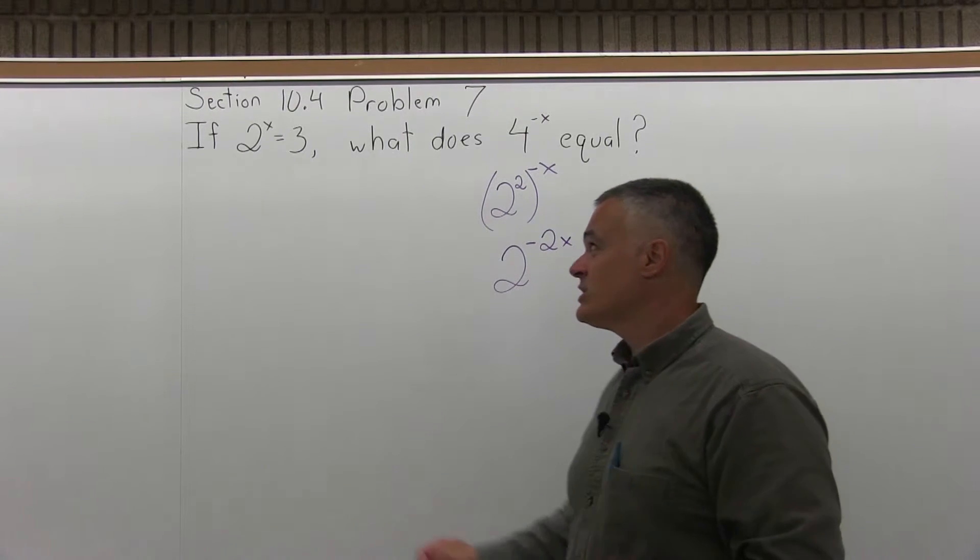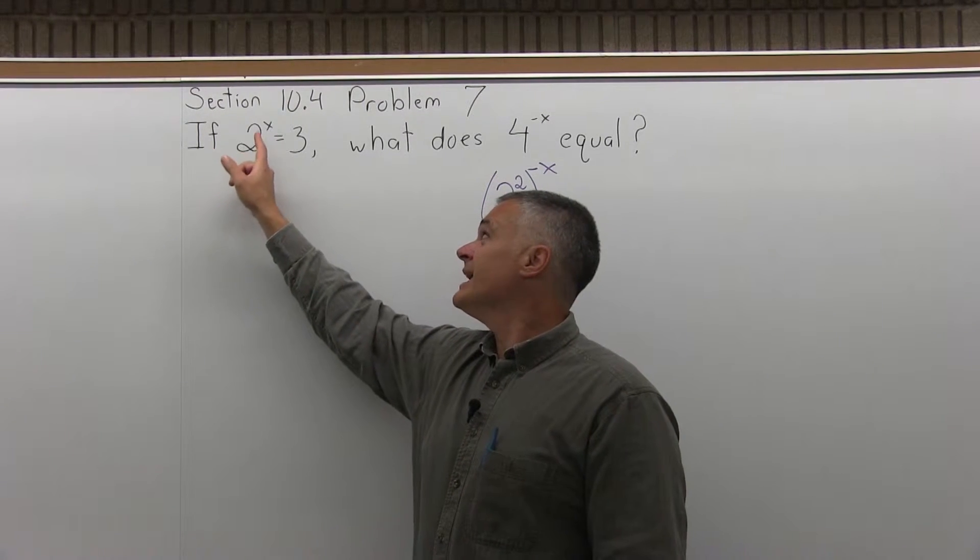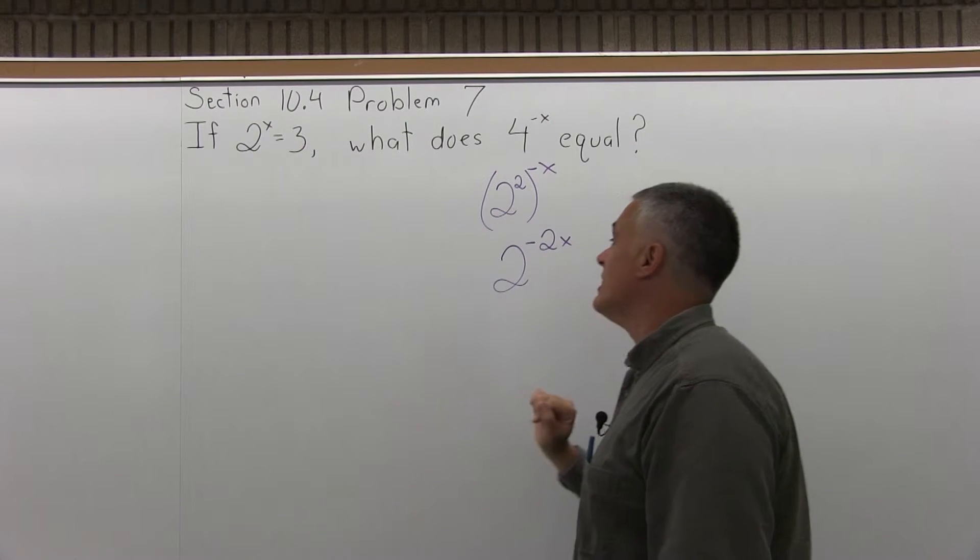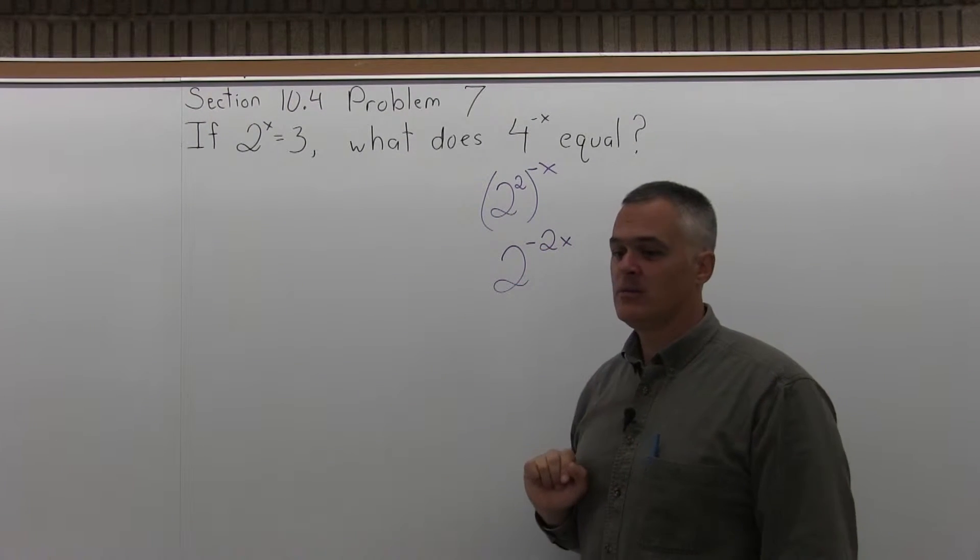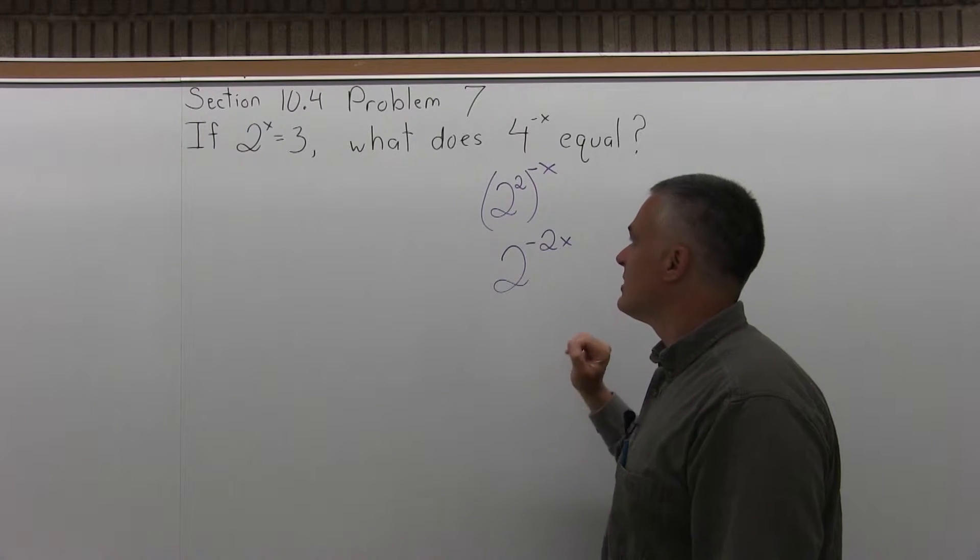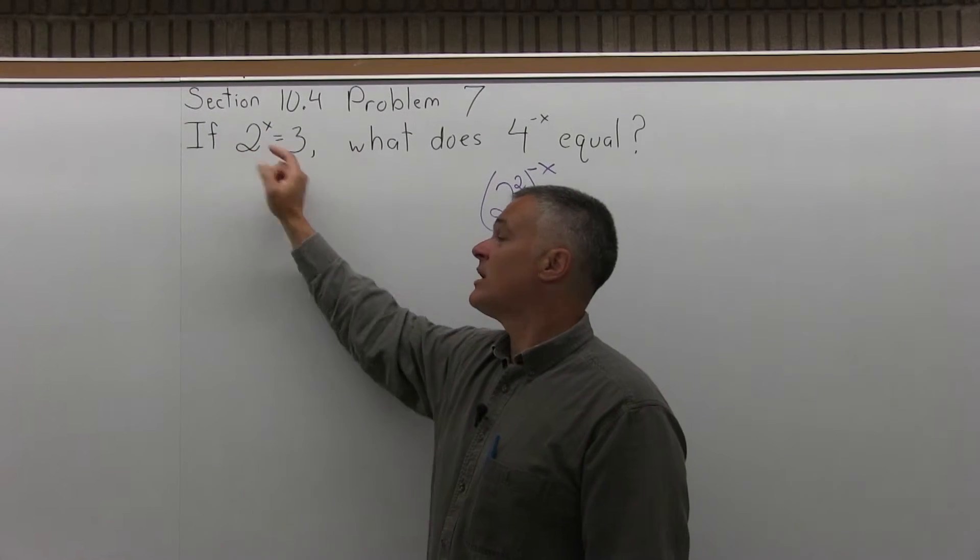Let's restate the question as, if 2 to the x power equals 3, what does 2 to the negative 2x power equal? Well, now I have something that I can change 2 to the x power equals 3 into.